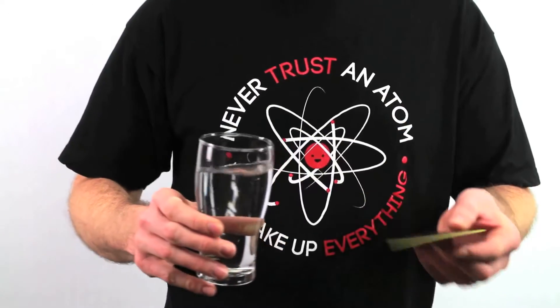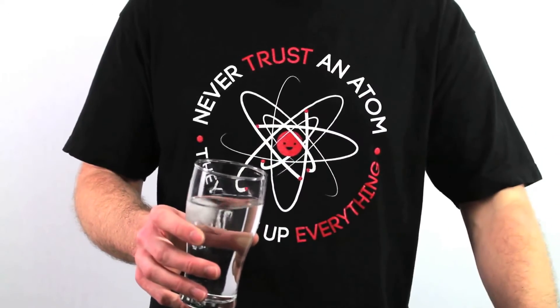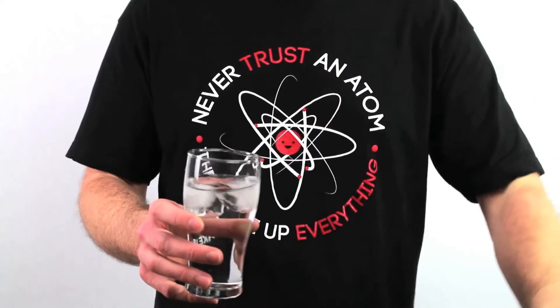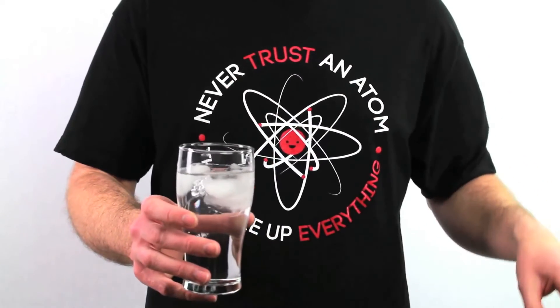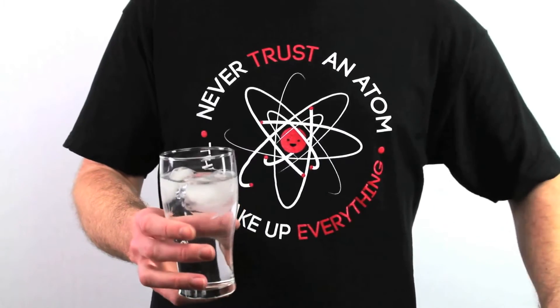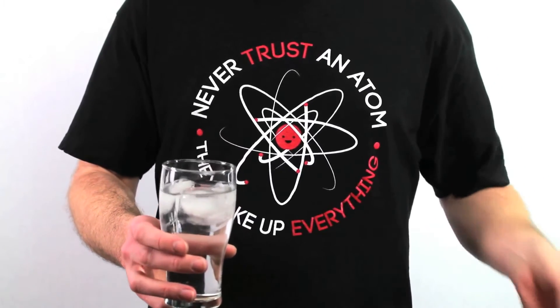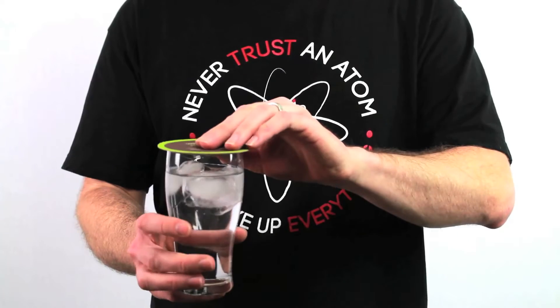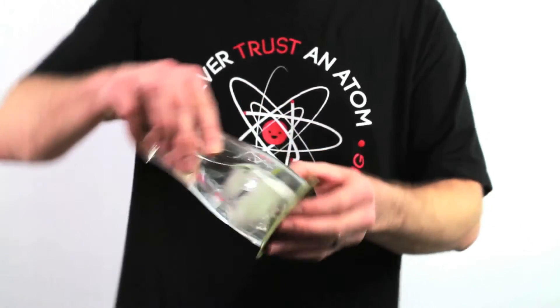Let's try it with some ice cubes. So now this is just ice water, like you get at a restaurant, with some ice cubes in there. Put the coaster over the top. Flip it over.